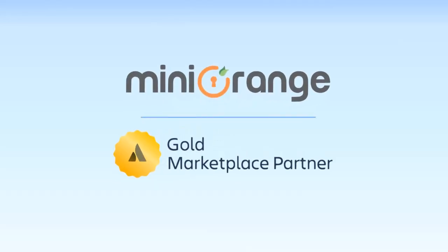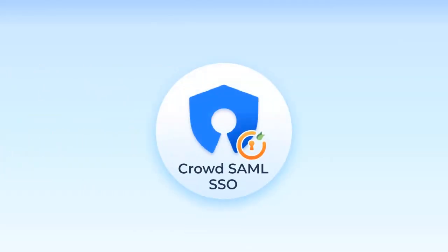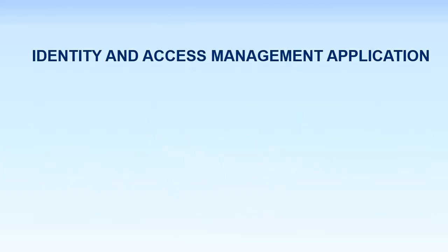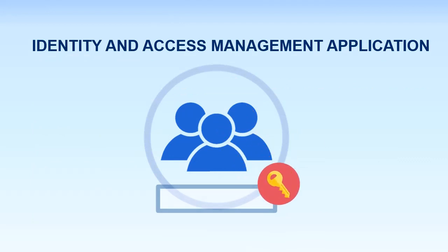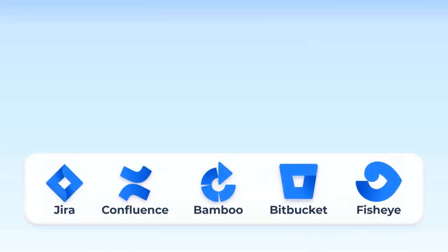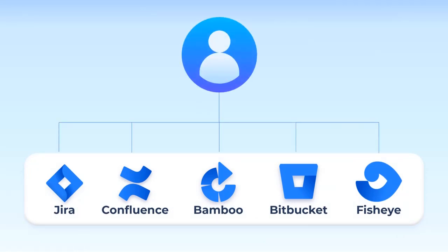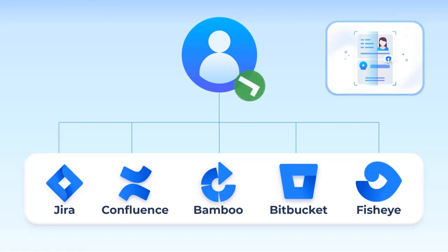Welcome to Mini Orange. Crowd is a centralized identity and access management application that manages user authentication for connected Atlassian applications. If a user tries to log in to any of these Atlassian apps using Crowd user credentials, Crowd will authenticate the users and allow them to log in to the Atlassian apps.